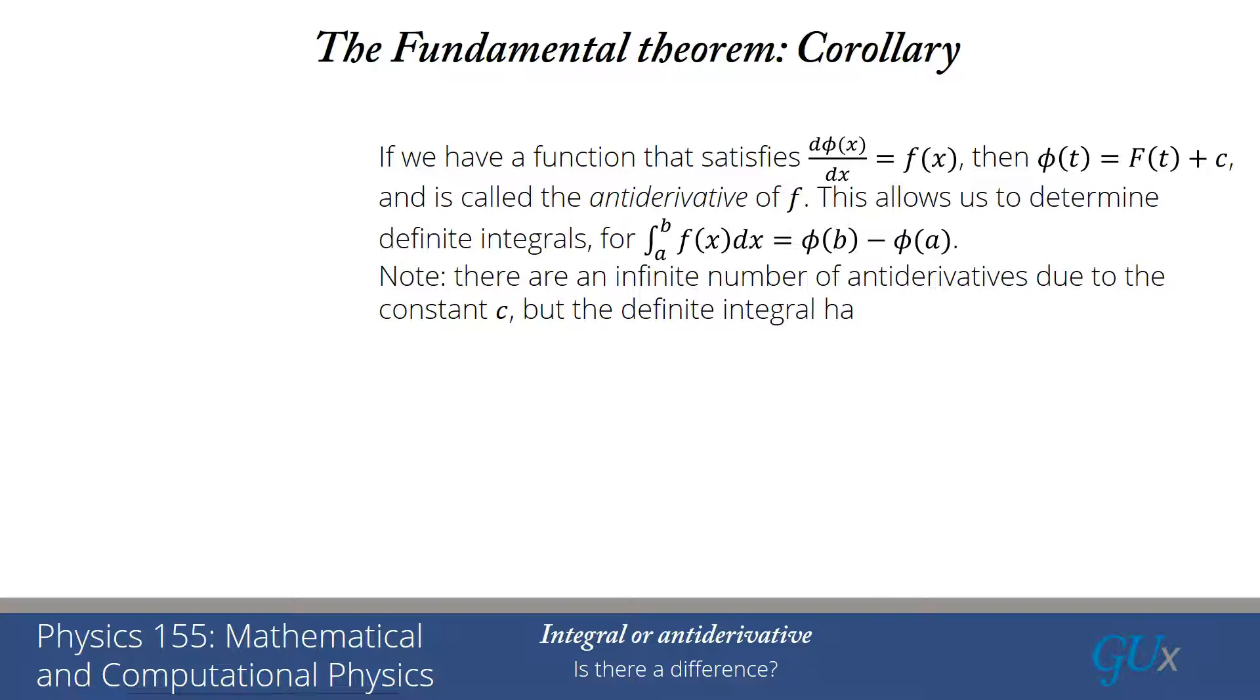So there are an infinite number of antiderivatives, but I have to use the same antiderivative when I evaluate φ(b) as I do for φ(a). And that means that they have the same constant. And so then that constant cancels when I take the difference.